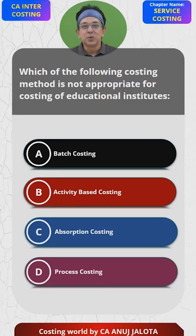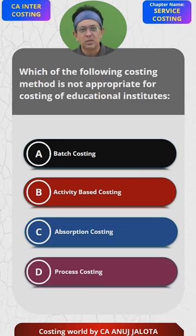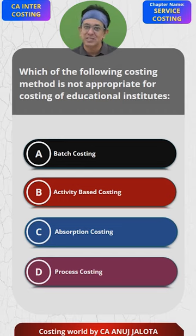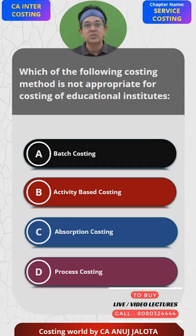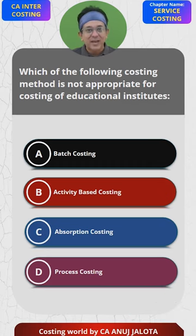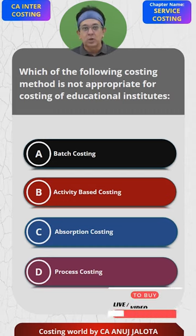Try thinking about an educational institute — like a college, school, or a coaching institute. Batch Costing can apply because they like to compute the cost for a certain batch. Activity Based Costing can apply — they would like to find out the cost of each and every activity. Absorption Costing can also apply, so that they can absorb all the common costs based upon some method.